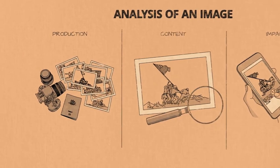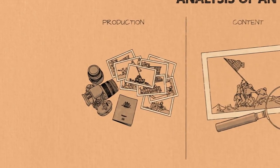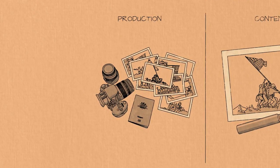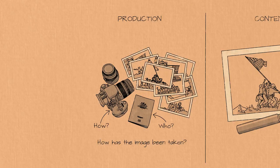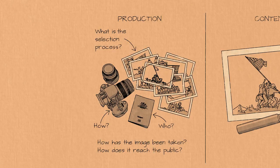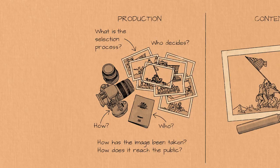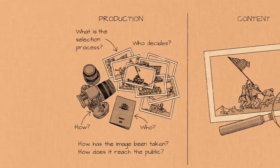Let us start with the first step: the production and construction of the image. This essentially involves asking how the image has been taken, who took it, and how do these images then reach the public. What are the selection processes in play that make one image appear on the front page as opposed to another? Who makes these decisions — was it the photographer, the photo editor, or the newspaper's main editor? You've got to remember there are really thousands of images to choose from, so why one gets selected over another is really quite important.